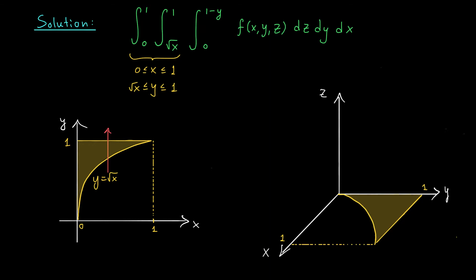This projected region tells us where all the action takes place. Whatever our z values are doing, it has to occur above or below this curved region in the xy-plane — we won't get any part of our region outside it. So what is z doing? From our inner integral, we see that z is going from 0 to 1 − y. The surface z = 0 is simply the xy-plane — it consists of all points with a height of 0.